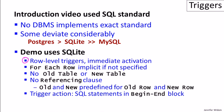SQLite has row-level triggers only — no statement-level triggers — and an immediate activation semantics. 'For each row' can be specified in triggers, but if it's not there, it's still a row-level trigger. It doesn't have old table or new table, since it has immediate activation semantics only, and it doesn't have a referencing clause. The variables old and new are automatically bound in every trigger to what would be old row and new row if it had a referencing clause. The action part of SQLite triggers are SQL statements embedded in begin-end blocks.